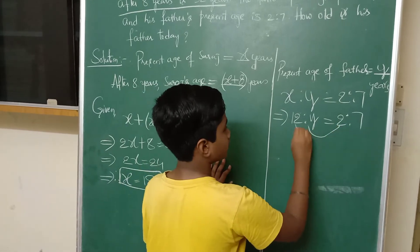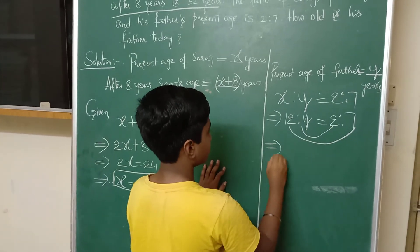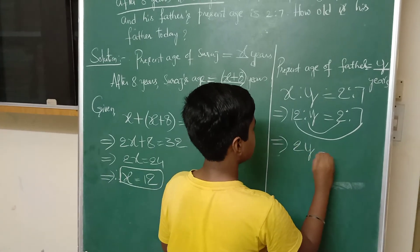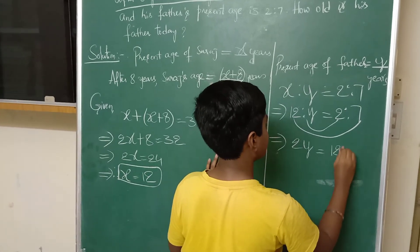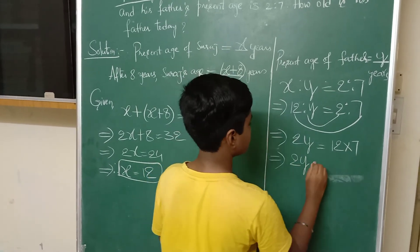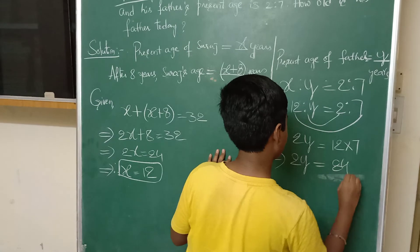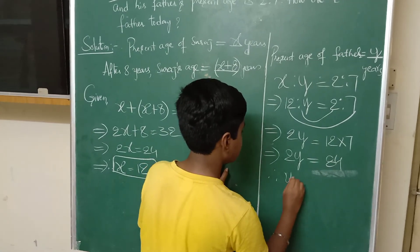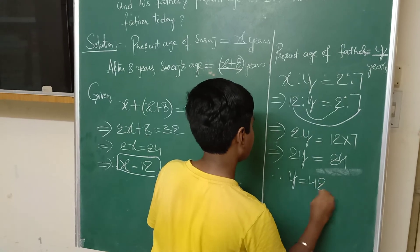Product of means is equals to product of extremes. Therefore, 2Y is equals to 12 into 7. 2Y is equals to 84. Therefore, Y is equals to 42 years.